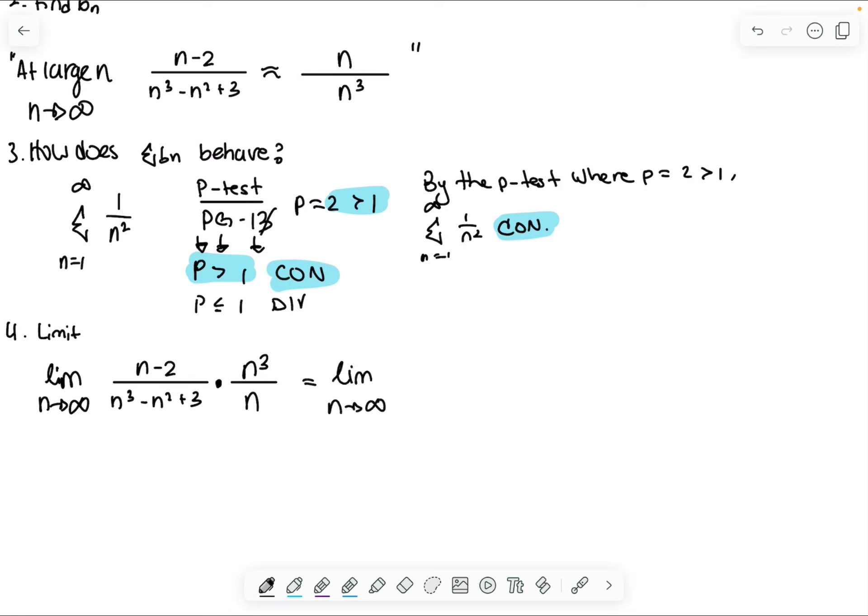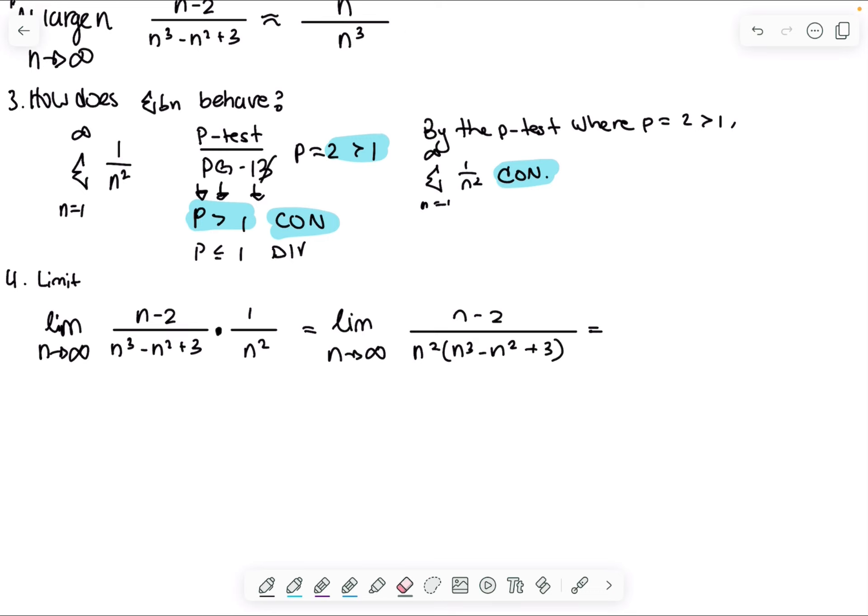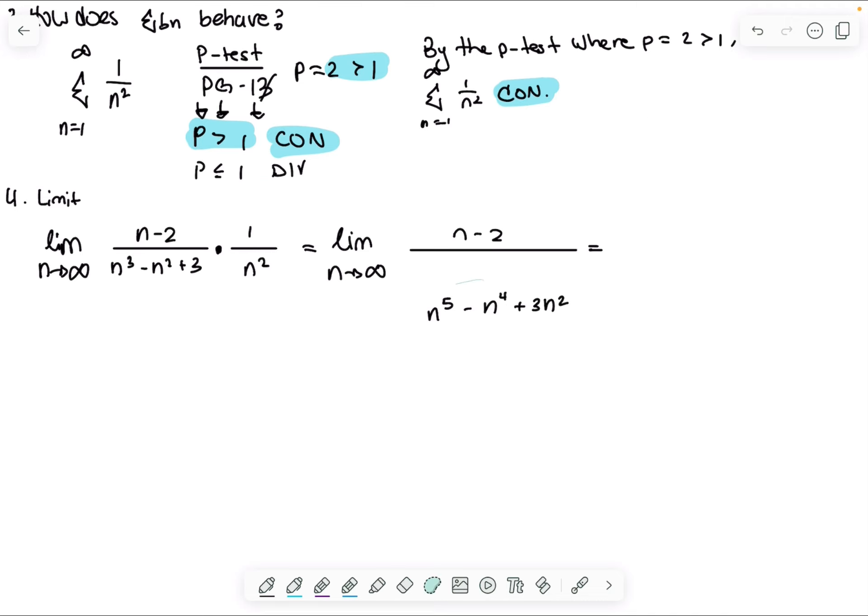And that's your limit. Remember that this can be simplified to one over n squared, so then this becomes n minus two and then n squared, n cubed minus n squared plus three. So this we can rewrite as n to the fifth minus n to the fourth plus three n squared. So we can replace that. And so this is a rational fraction. So to figure out this limit, we can divide every term in the fraction by the term with the highest power in the denominator. So that's n to the fifth.